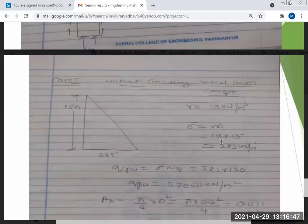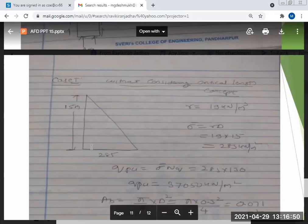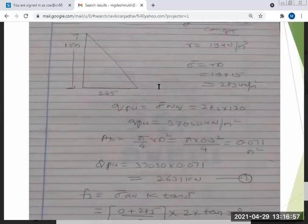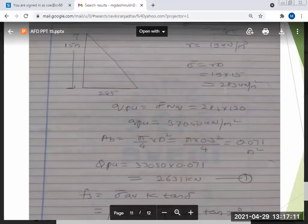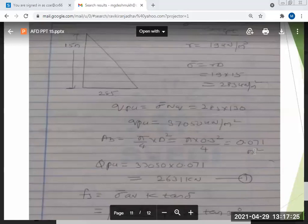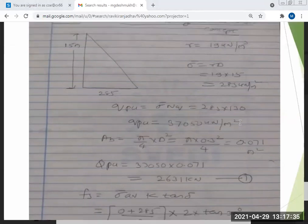So Qu is equal to Qup plus Qus. All these are known to you. Now we will calculate one by one. This is 19 into 15, so at top zero and at bottom surcharge is sigma 285. First we will calculate end bearing resistance. End bearing resistance is small qp. Small qp is given by gamma d Nq: gamma into d is 285 into Nq is 130. 285 is the gamma d, Nq is 130, so this is 285 into 130, that is 37050. And AB area is given by pi by 4 d square: pi by 4 into 0.3 square equals 0.071.